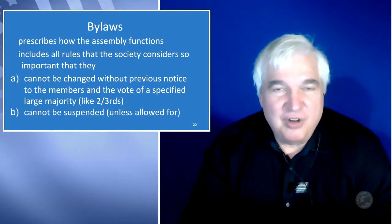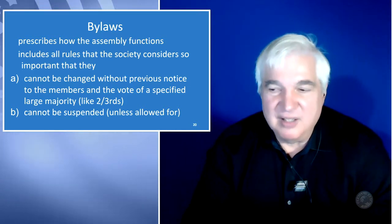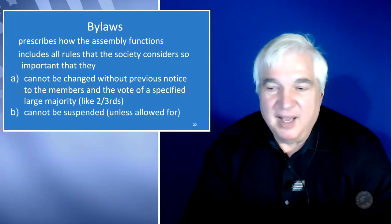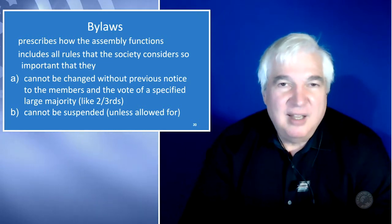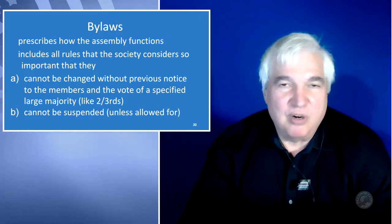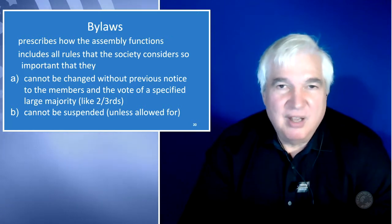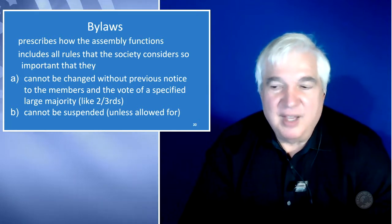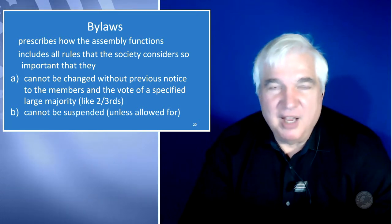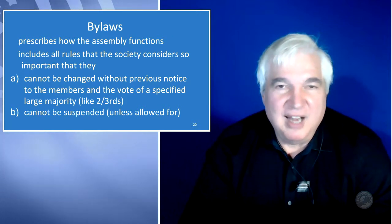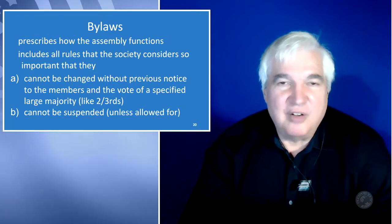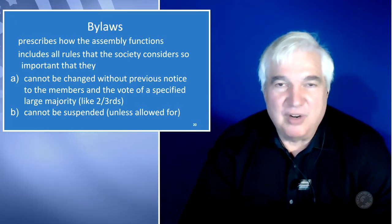The bylaws are there to protect the membership on things that are very important to you. You can describe in the bylaws what a quorum is. The default is 50% of the people attending a meeting. Sometimes people specify quorums that cannot be attained, and then you get in a conundrum where you can't hold a viable meeting in order to change the quorum numbers.